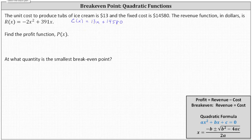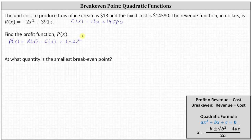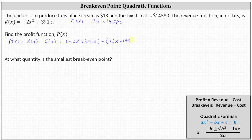And now we can find the profit function, where the profit function p of x is equal to the revenue function r of x minus the cost function c of x. This gives us the quantity negative 2x squared plus 391x, which is the revenue function, and then minus the quantity 13x plus 14,580, which is the cost function. It is important we have the cost function in parentheses so that we subtract the entire cost function.